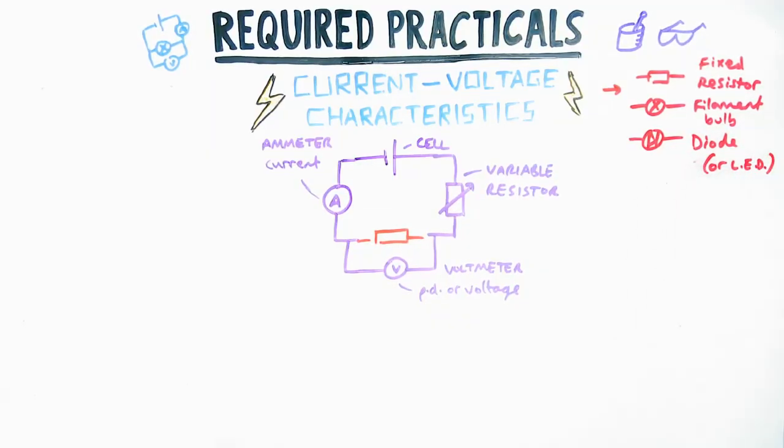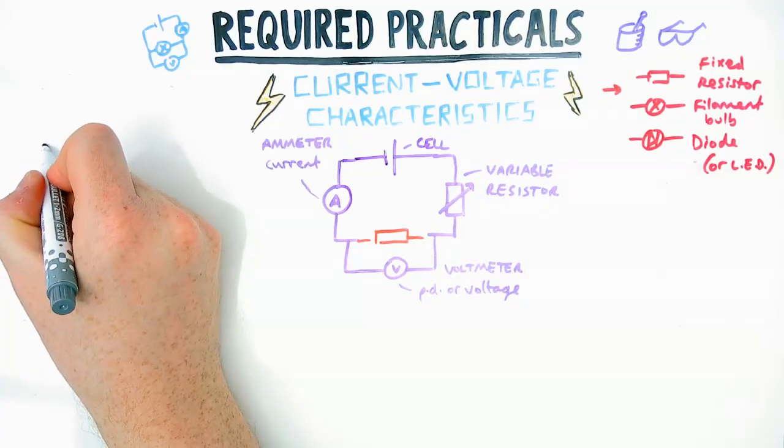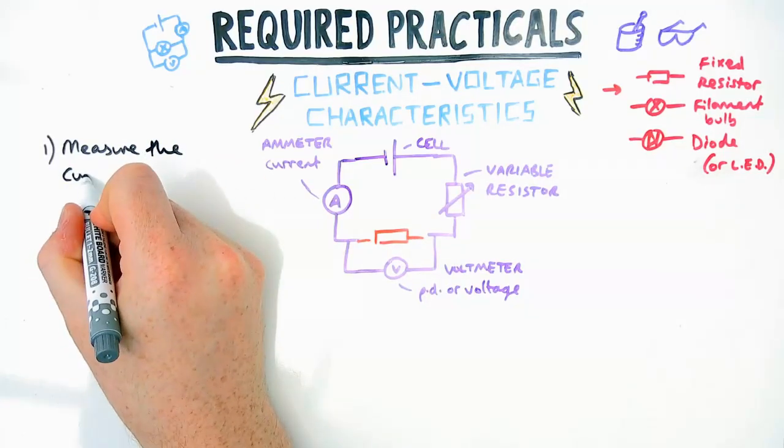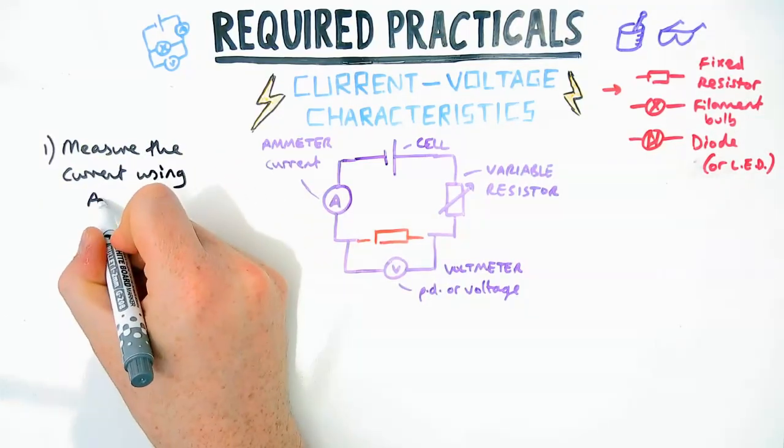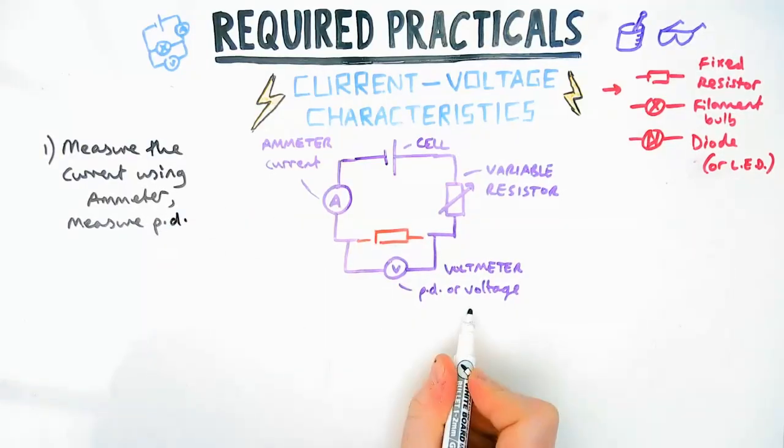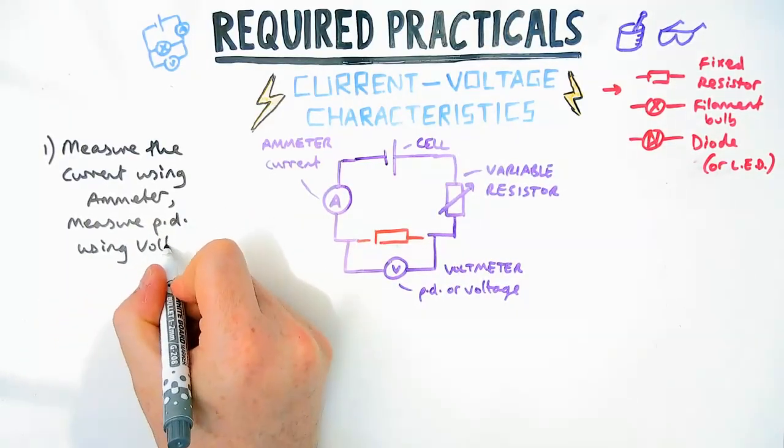The method is the same for all three. Let's have a look at what we could be asked to write down. First things first, we're going to measure the current using the ammeter and measure the PD using the voltmeter. That should be nice easy marks straight up.